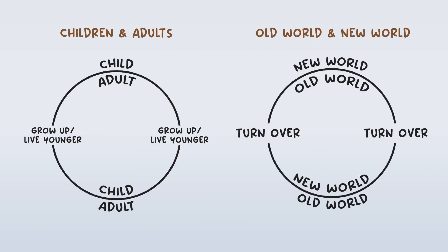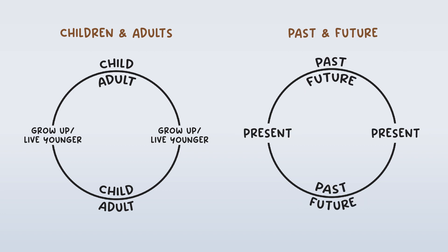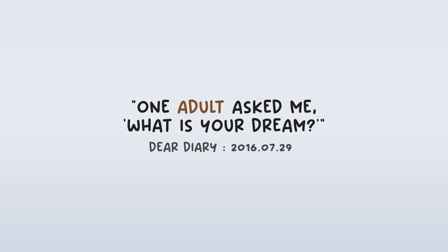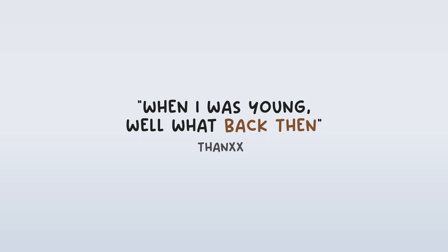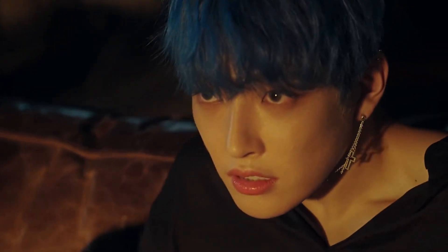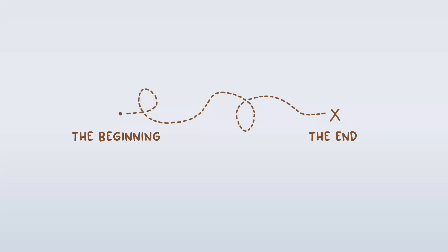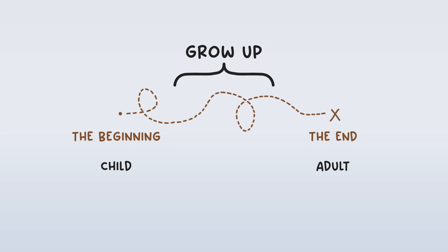A child is someone who was recently born — you might even say that they are new to this world. An adult is someone who has been alive for longer; they're old. For a child, their future is adulthood. For an adult, their past is childhood. Conversations between children and adults in Ateez content can also be interpreted as conversations between someone from the past and someone from the future, or as conversations between someone from old world and someone from new world. When Ateez debuted, they were rookies — the children of the music industry. By the end of their careers, they will be well-established leaders — the adults of the industry. Ateez's long journey is the journey in which they grow up.